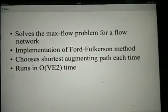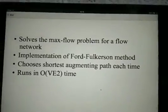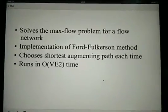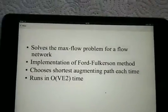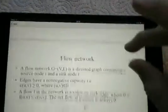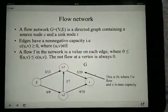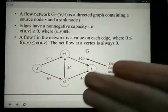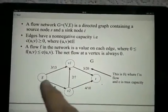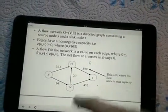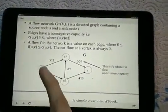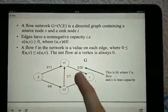The Edmonds-Karp algorithm is a modification of the Ford-Fulkerson method for finding the max flow in a flow network. A flow network is a directed graph containing a source node S and a sink node T, and all edges have a non-negative capacity, i.e. this value on the right here.